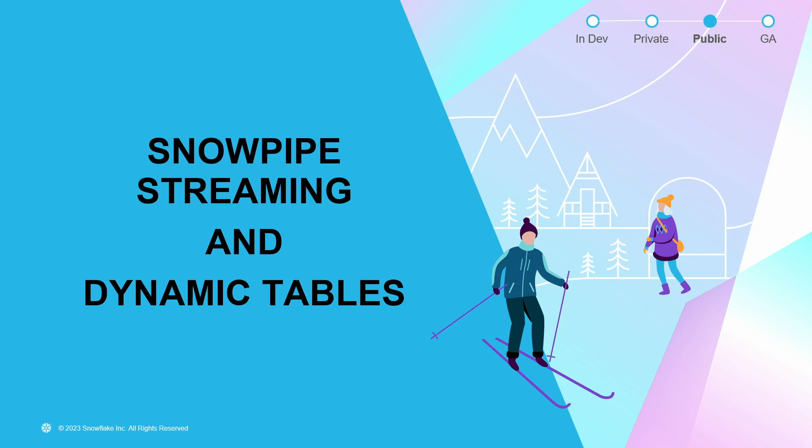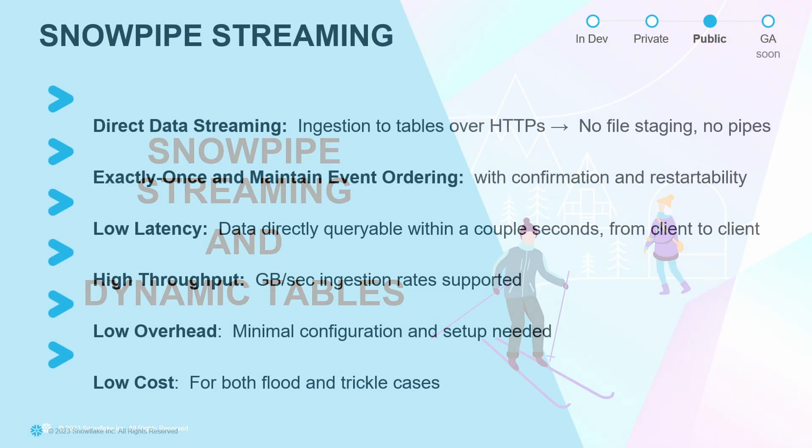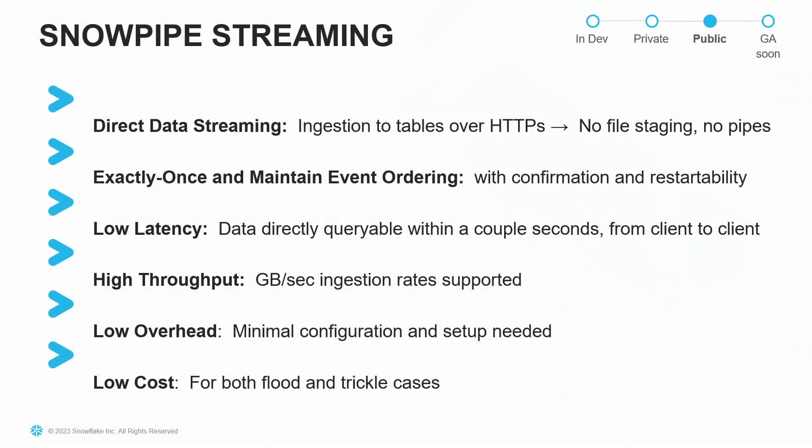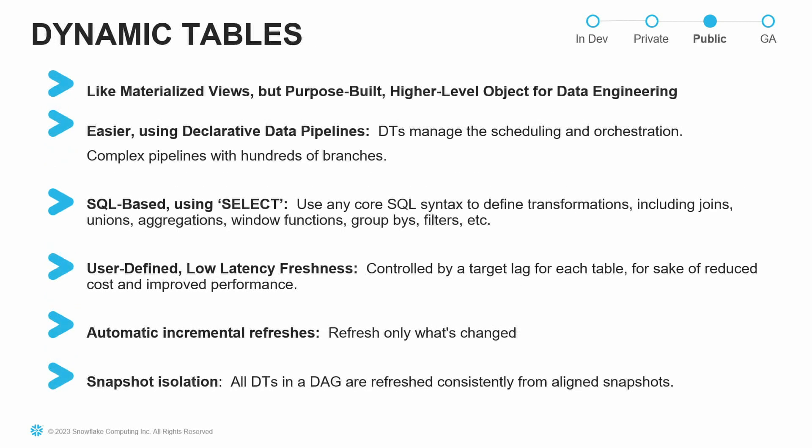We're going to walk through the quick start and its capabilities — specifically the new capabilities announced here during Summit. Those are Snowpipe Streaming and Dynamic Tables, working together. Snowpipe Streaming provides a client to communicate directly to Snowflake for ingestion. Dynamic Tables provide a purpose-built data engineering object to work directly inside Snowflake to do ELT transformations, preparing data from the initial landing table to the final forms the business needs.